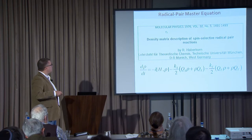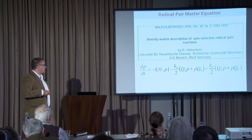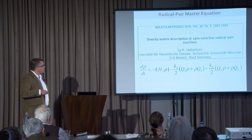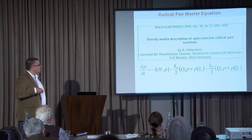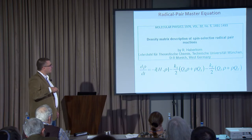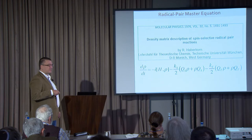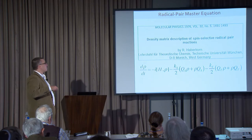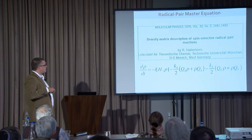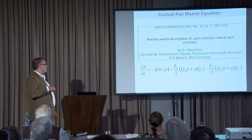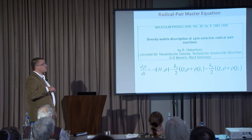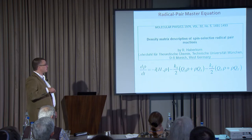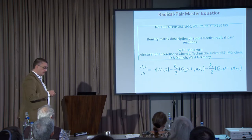Since the beginning of the field in the 1960s until recently, the field of spin chemistry has used an equation postulated by a German theoretical physical chemist — the Haberkorn equation. It has the unitary part of course, and then there is the open system description involving projection operators and two rates, ks and kt, that are the recombination rates.